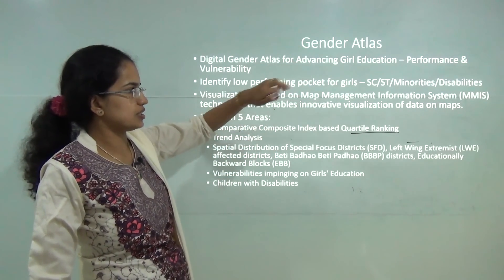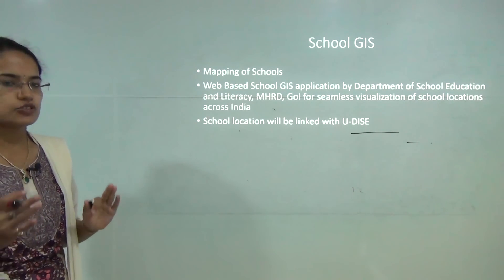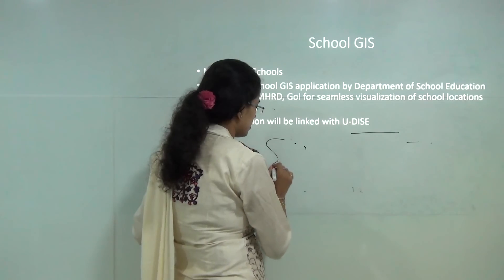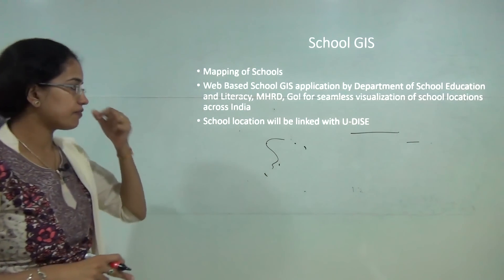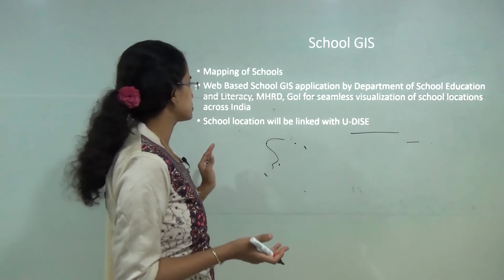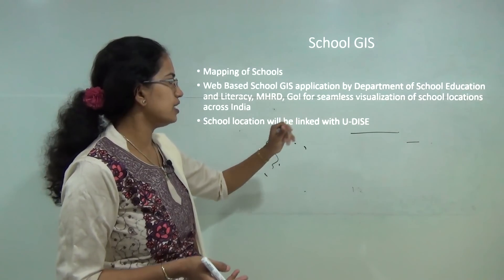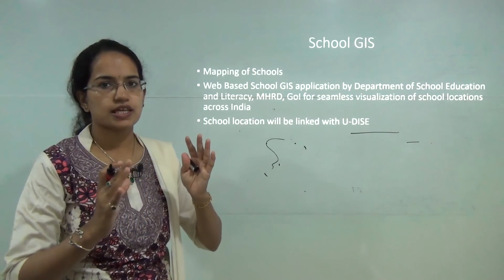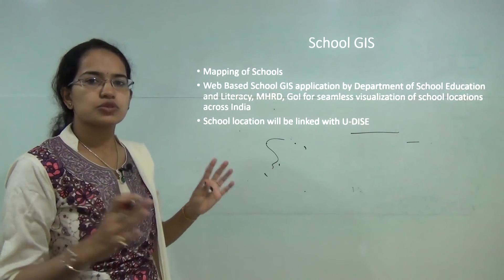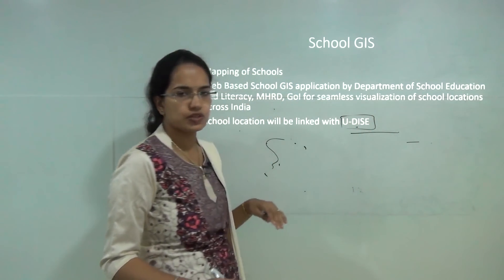For girl education there is another scheme called UDAAN, to be discussed later. Another important scheme is School GIS — the mapping of all schools across India on a common national map. This project is initiated by the Department of School Education and Literacy under MHRD, Government of India. It provides information on amenities, road structure, and accessibility to schools, and links schools to the UDISE system.